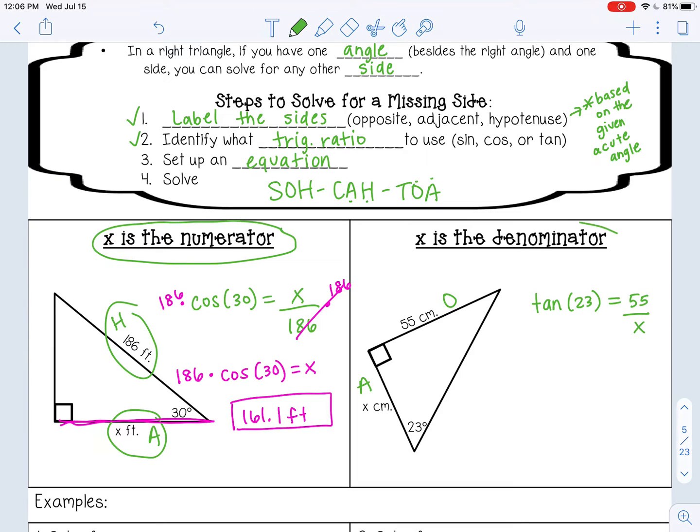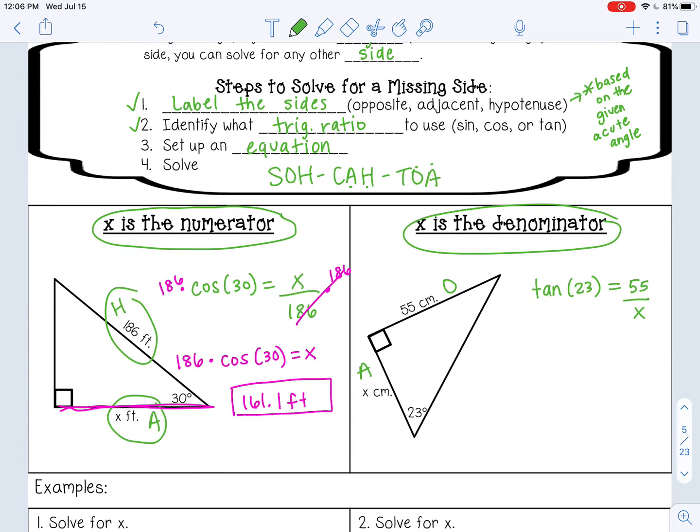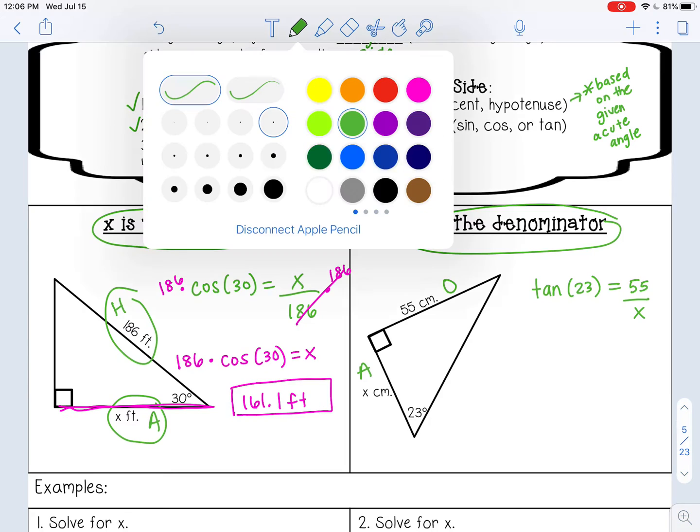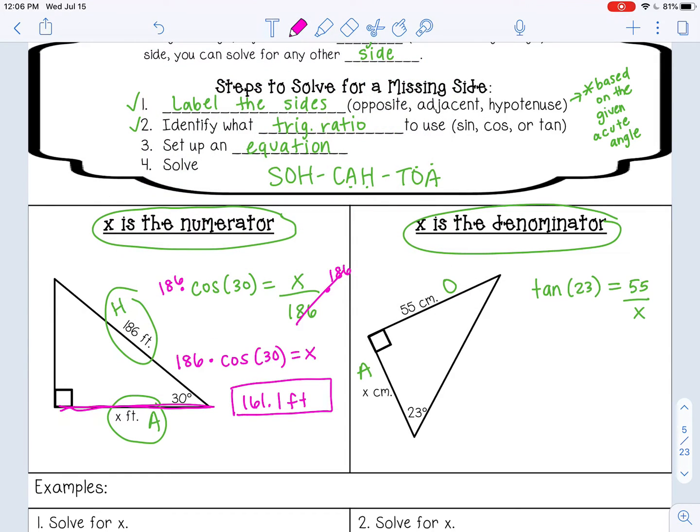So as you can see, x is in the denominator. For this one, what we can do is multiply by x on both sides first. This one has a couple more steps. I'm going to multiply by x first to get it out of that denominator.